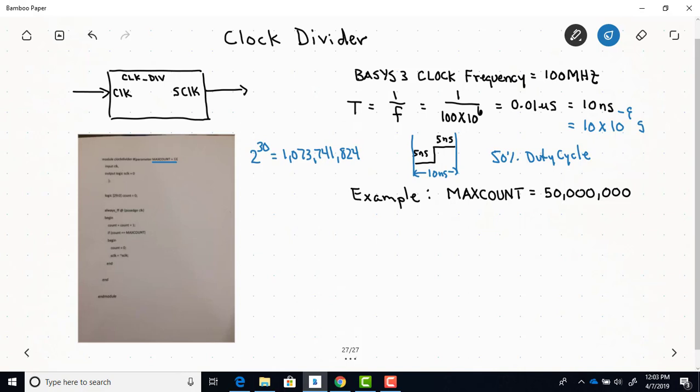And then within the always FF block, and you can see it's sensitive to a positive edge of the clock. Well, we're just setting count equal to count plus 1. So every time we enter this always block on the positive edge of a clock, we're just incrementing that count. And then you can see here that we don't come out of this unless count equals the max count. And when it does, we go into this part of the code here, where now we set the count back to 0, and we set S clock to the inverse S clock.